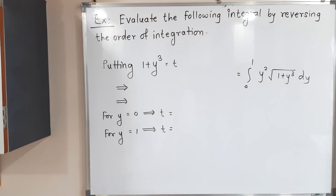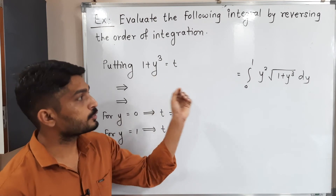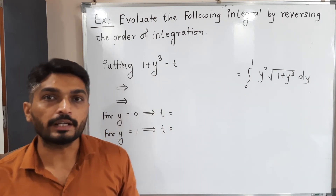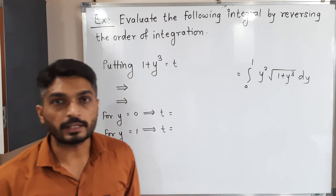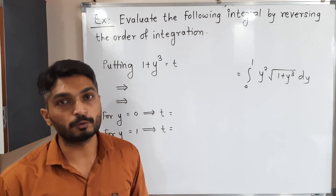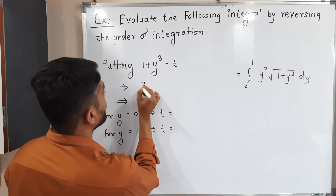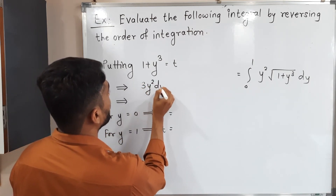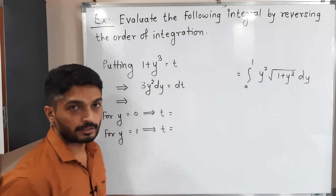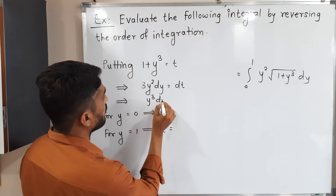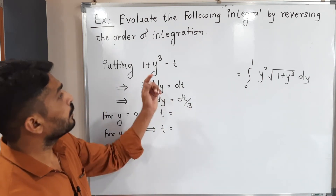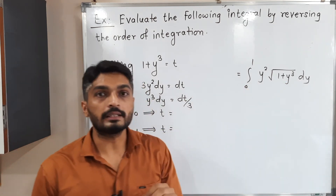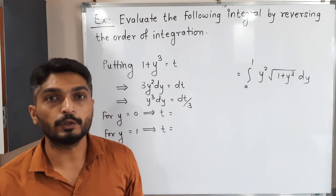Let t = 1 + y³. Differentiating: dt = 3y² dy, so y² dy = dt/3. We also change the limits: when y = 0, t = 1 + 0 = 1; when y = 1, t = 1 + 1 = 2. So the new limits are t = 1 to t = 2.